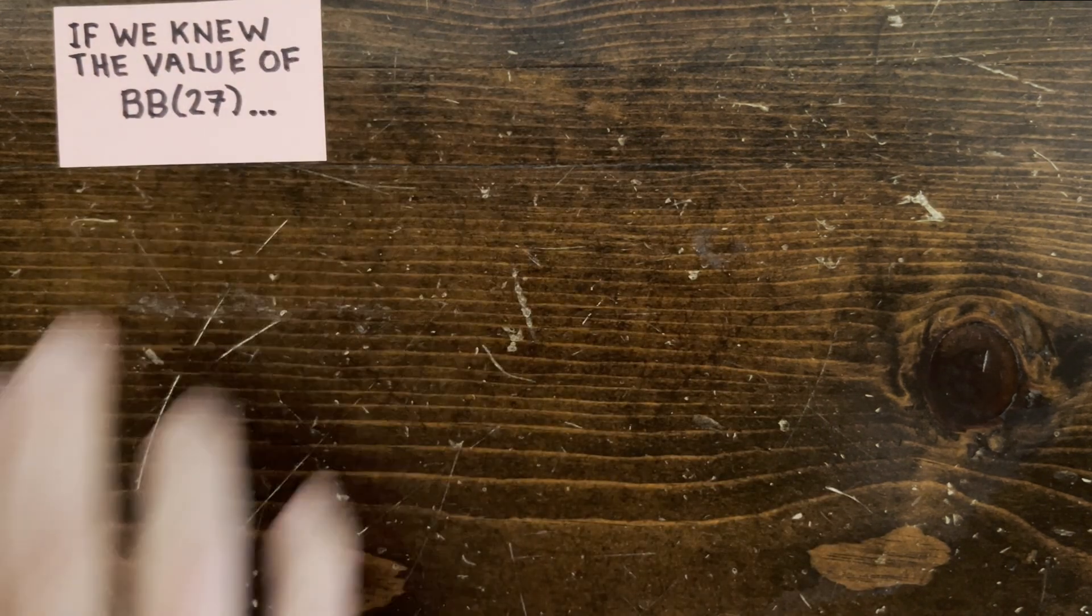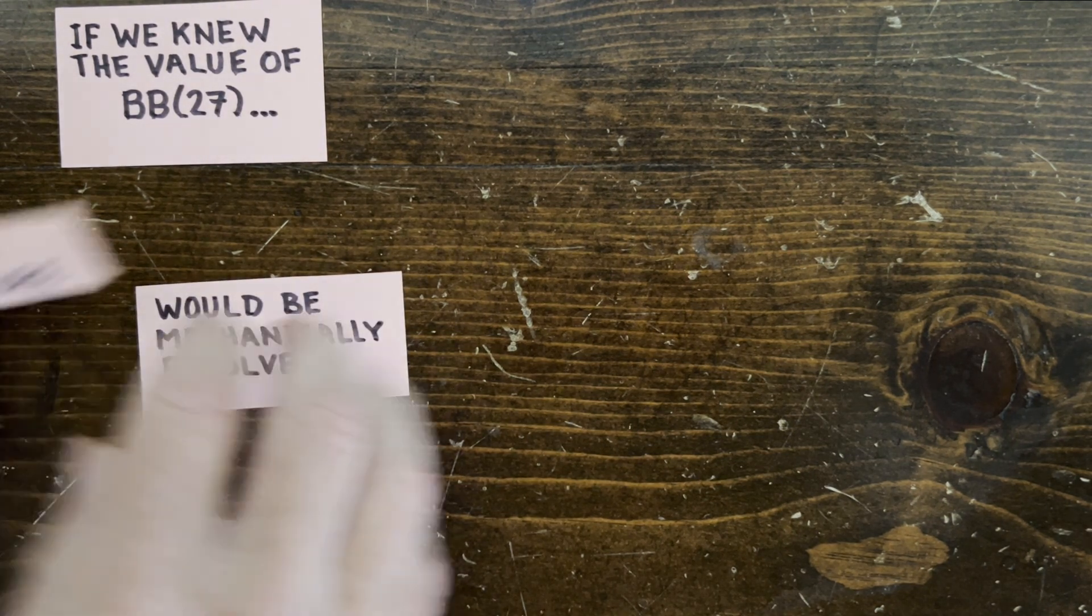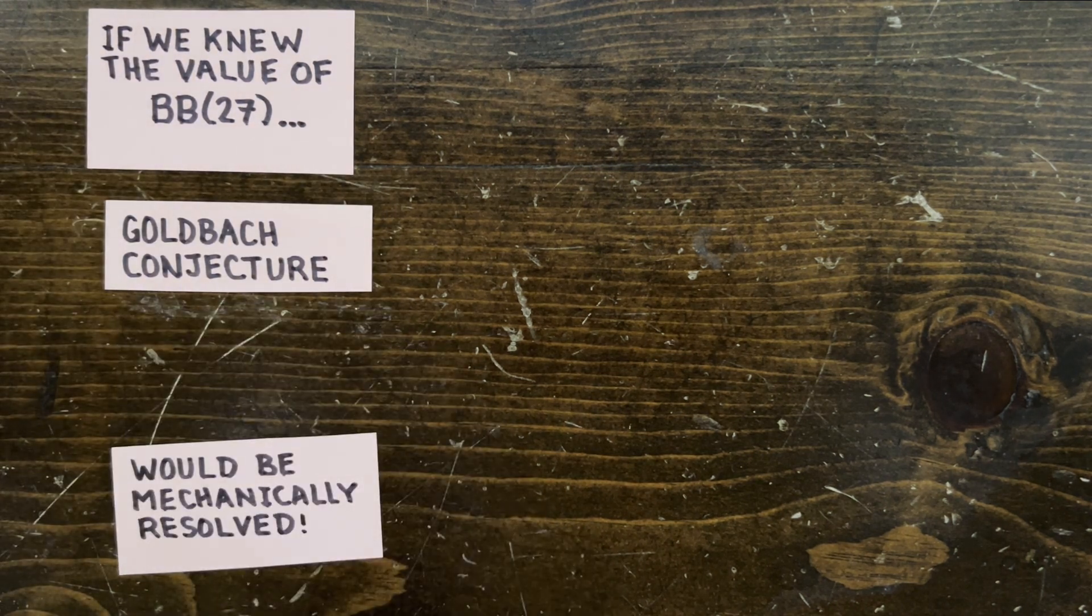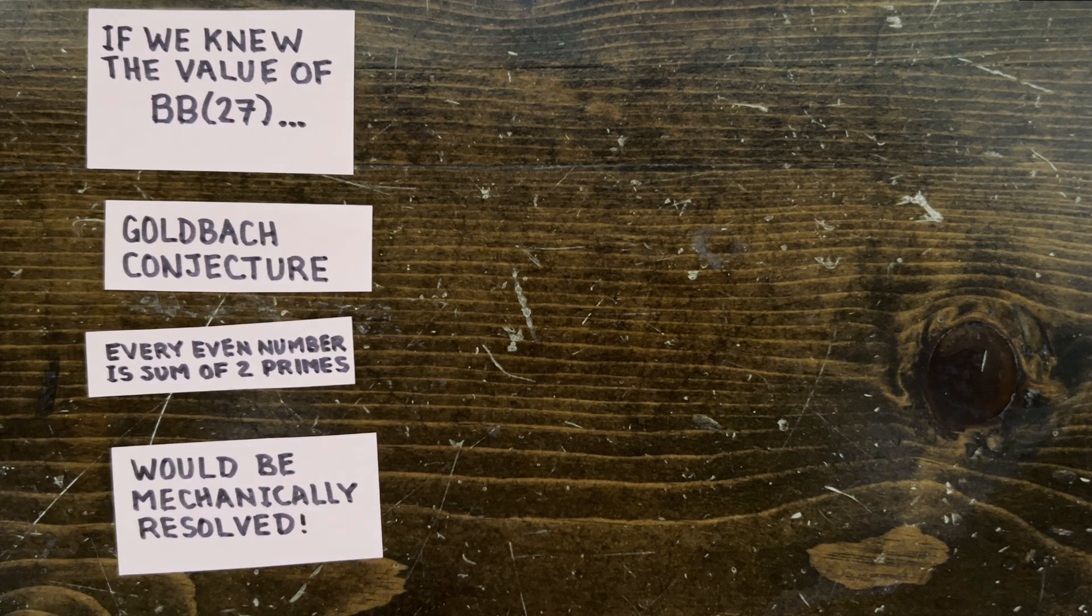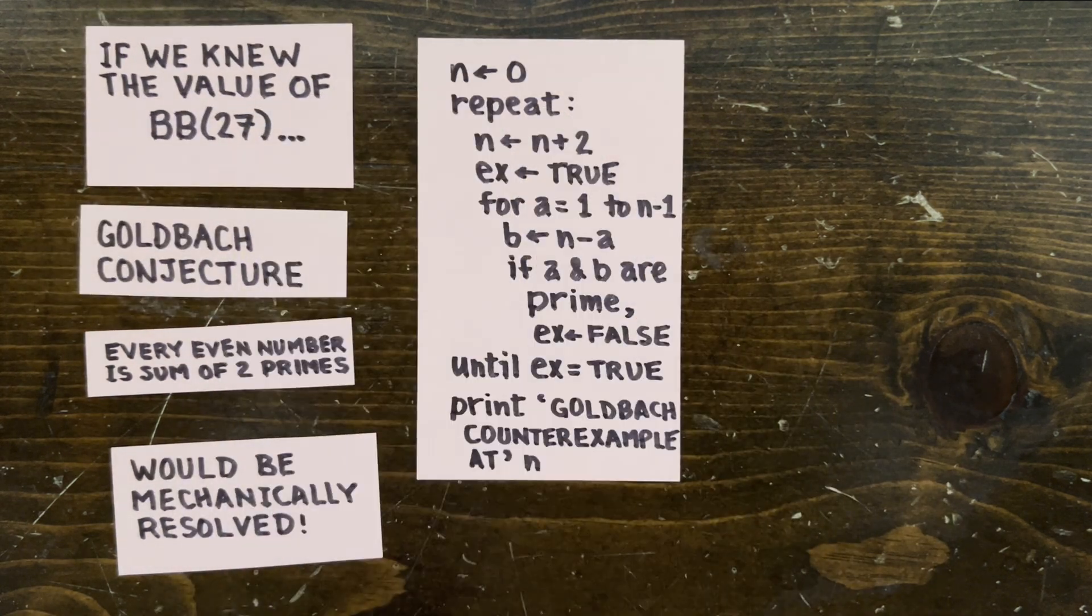And people are pretty interested in nailing down exact values for the BusyBeaver function for n greater than 4. And here's one reason. Suppose we knew the value of BB(27). Then we'd have a way to mechanically resolve long-standing mathematical conjectures like Goldbach, which says that every even number is the sum of two primes.